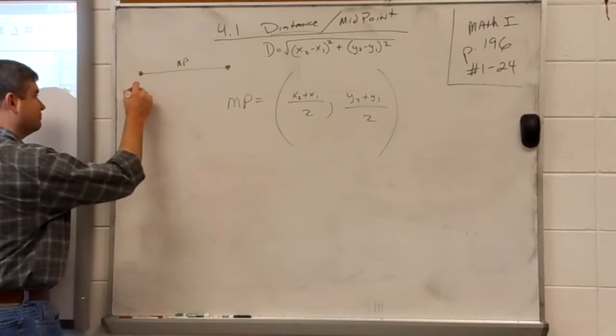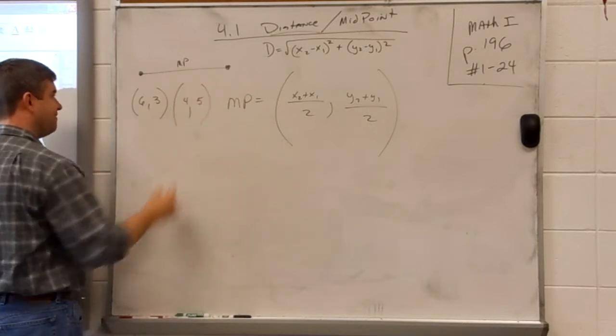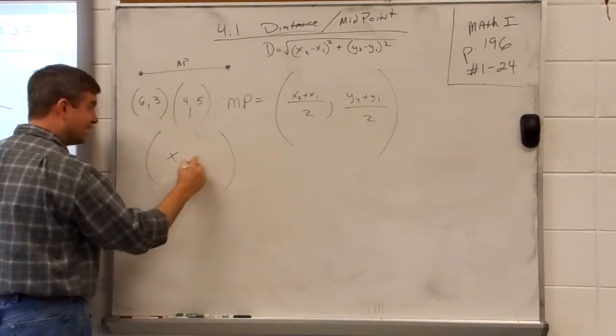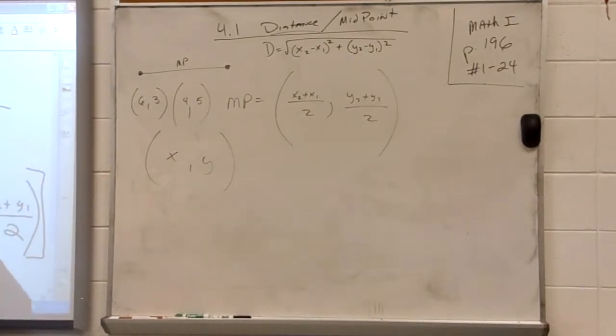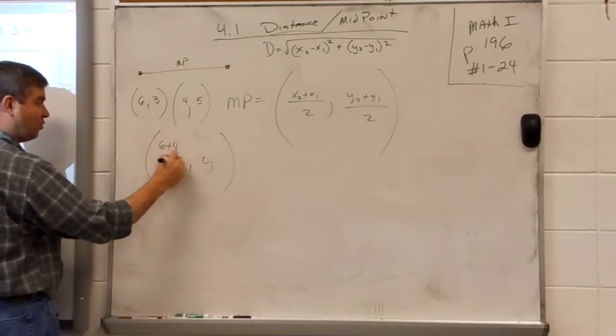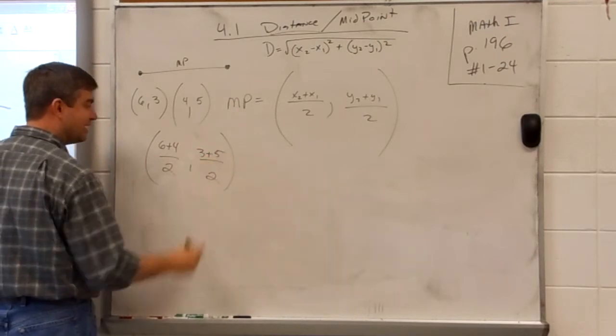Let me do an example. I think that'll help you. 6, 3 and 4, 5. These are two points, and the directions say, find the midpoint. Well, you know that it's going to have an x and a y, right? Always know that the midpoint will be an x and y. Some people mess up sometimes, and they only tell me one, like the midpoint's 5. Well, guys, the midpoint will always have an x and a y, so don't make that mistake. To find the x, we simply say 6 plus 4 divided by 2. To find the y, we simply say 3 plus 5 divided by 2.